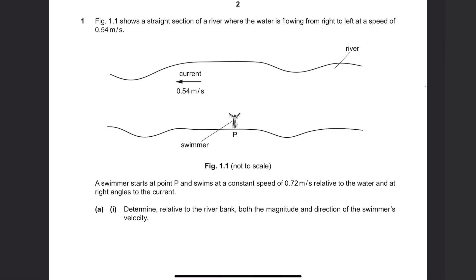Figure 1.1 shows a straight section of a river where the water is flowing from right to left at a speed of 0.54 meters per second. A swimmer starts at point P and swims at a constant speed of 0.72 meters per second relative to the water and at right angles to the current. If I draw this as a diagram, it looks like this.